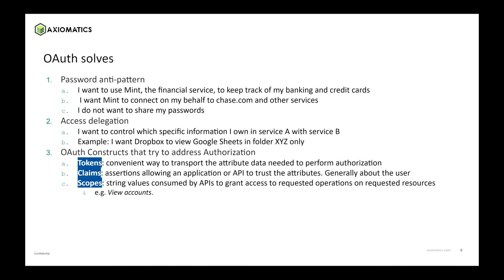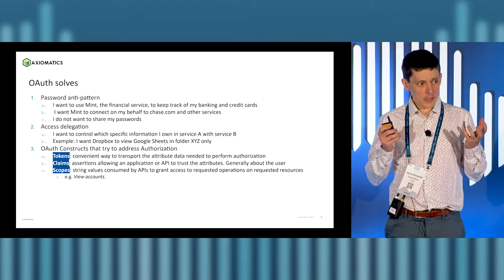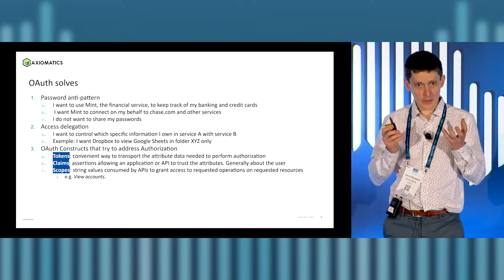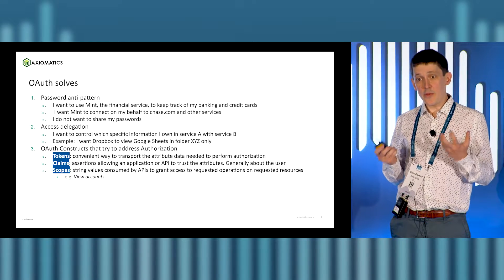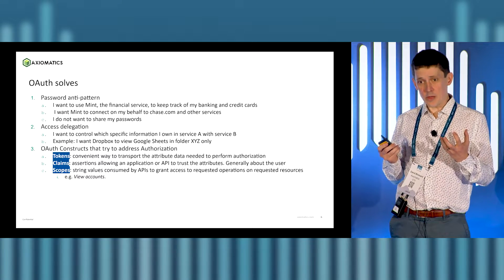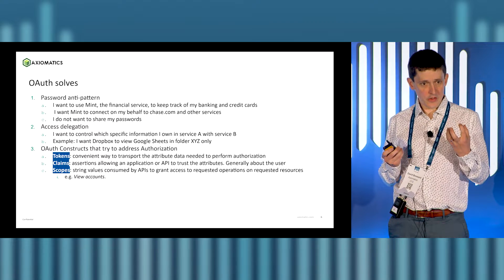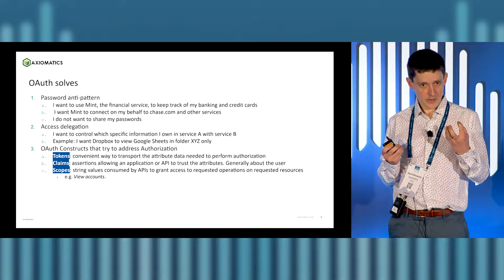Some of the things you can do with OAuth is define scopes, define claims, define tokens — all of which are really useful constructs to build an authorization strategy. But it's very much what I'm going to call an identity-centric authorization approach.